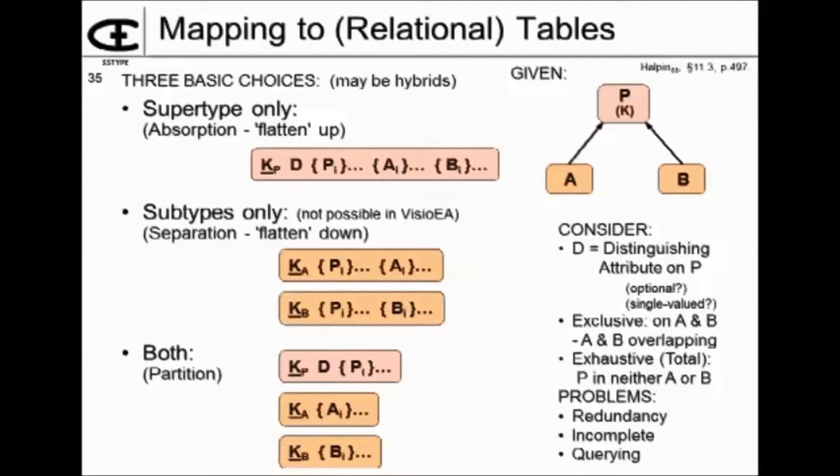Subtypes only is flattening down, basically, and that's been called separation as well. In this case, when I flatten down, I have to take everything in the supertype and store it with the subtypes. And I'll have a table for each subtype population.